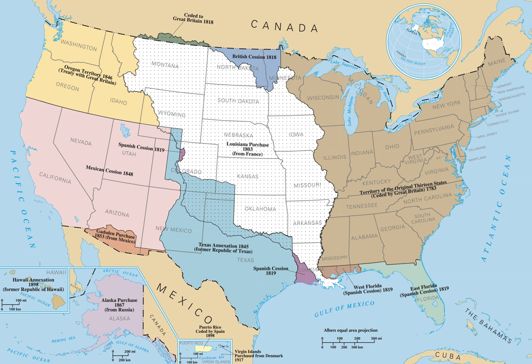The southern United States constitutes a large region in the southeastern and south-central United States, usually enumerated as the following: Kentucky, Tennessee, Virginia, West Virginia, Maryland, North Carolina, South Carolina, Georgia, Florida, Alabama, Mississippi, Arkansas, and Louisiana — all of these are also considered to number among the eastern United States.